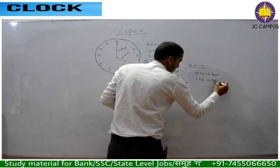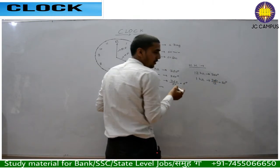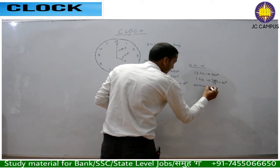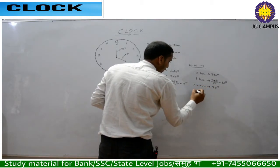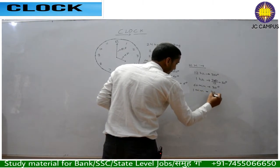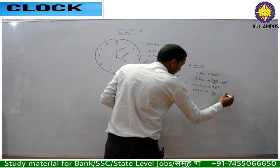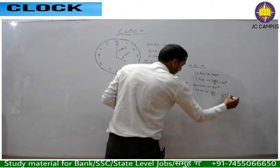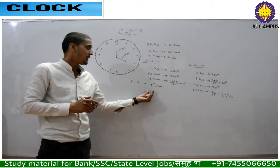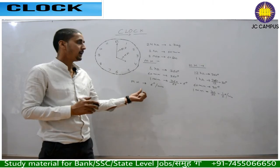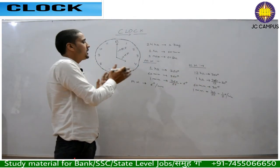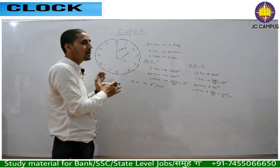For the hour hand: one hour means 60 minutes and it covers 30 degrees in one hour. So in one minute it covers 30/60 = 1/2 degree per minute. So minute hand speed is 6 degrees per minute and hour hand speed is 1/2 degree per minute.